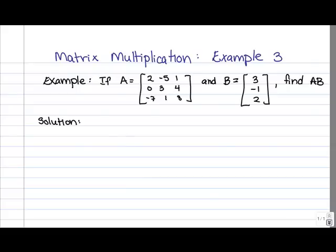Now, we know this multiplication can be done because the number of columns in A is equal to the number of rows in B, and when we multiply a 3 by 3 times a 3 by 1, we'll end up with a 3 by 1 matrix.